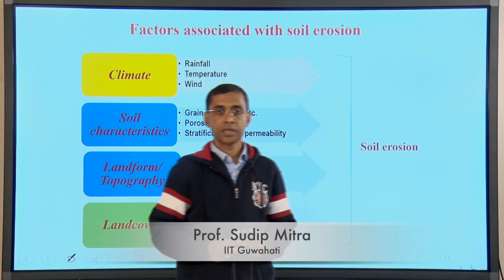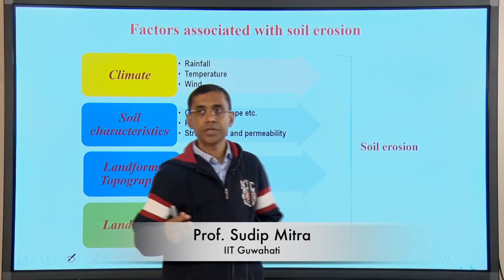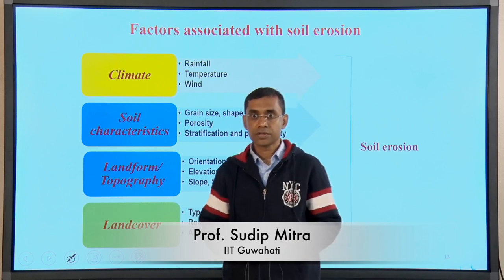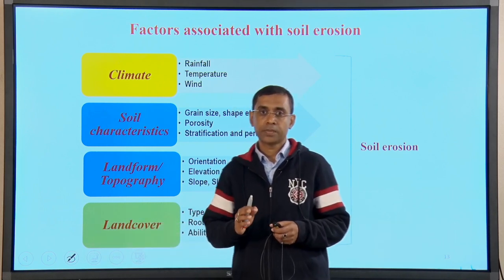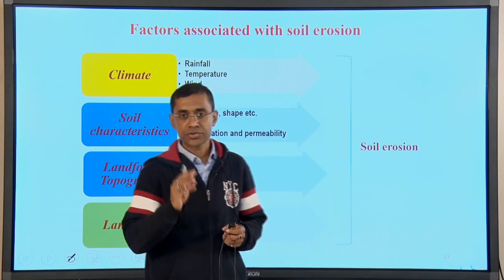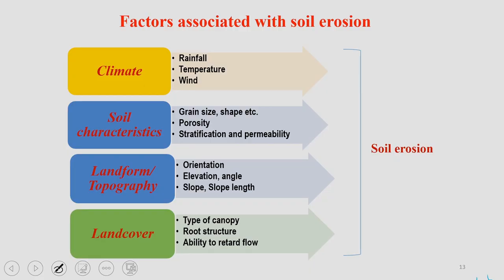Following the discussion of soil erosion causes and processes, we are now going to discuss the factors associated with soil erosion. There are a few very important factors: climate, soil characteristics, landform or topography, and land cover. Each one of them has a very important role to play in causing soil erosion.